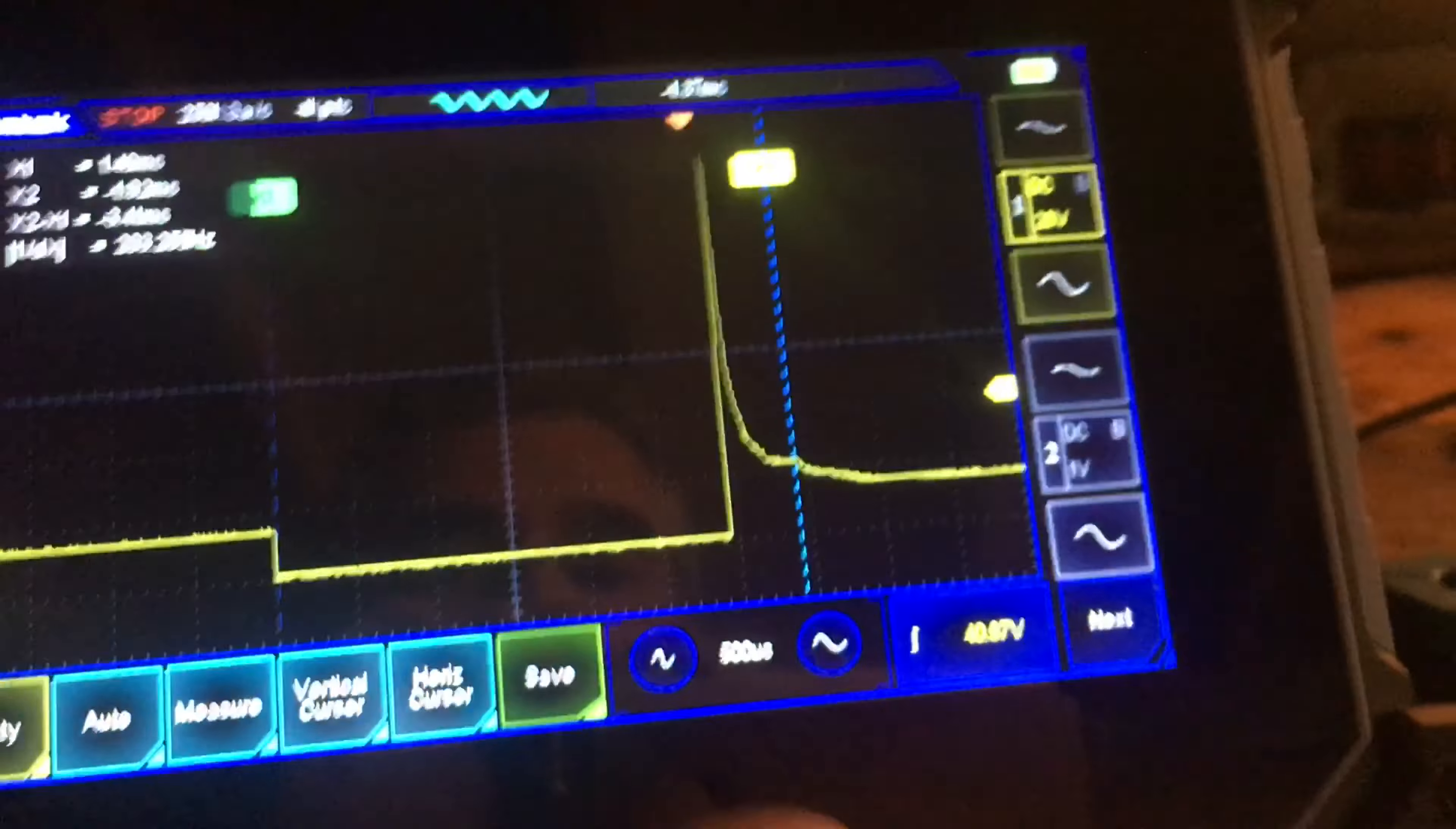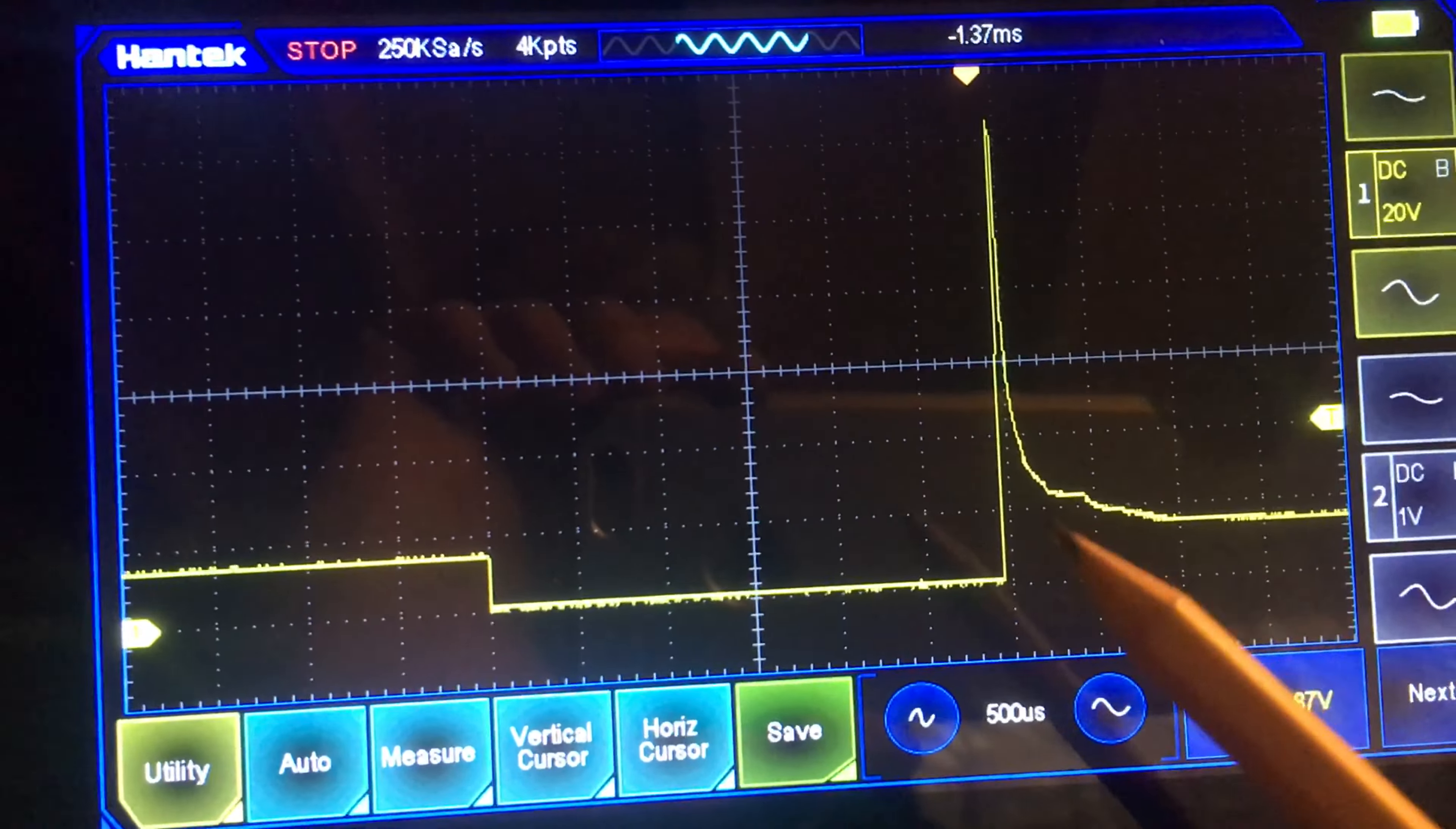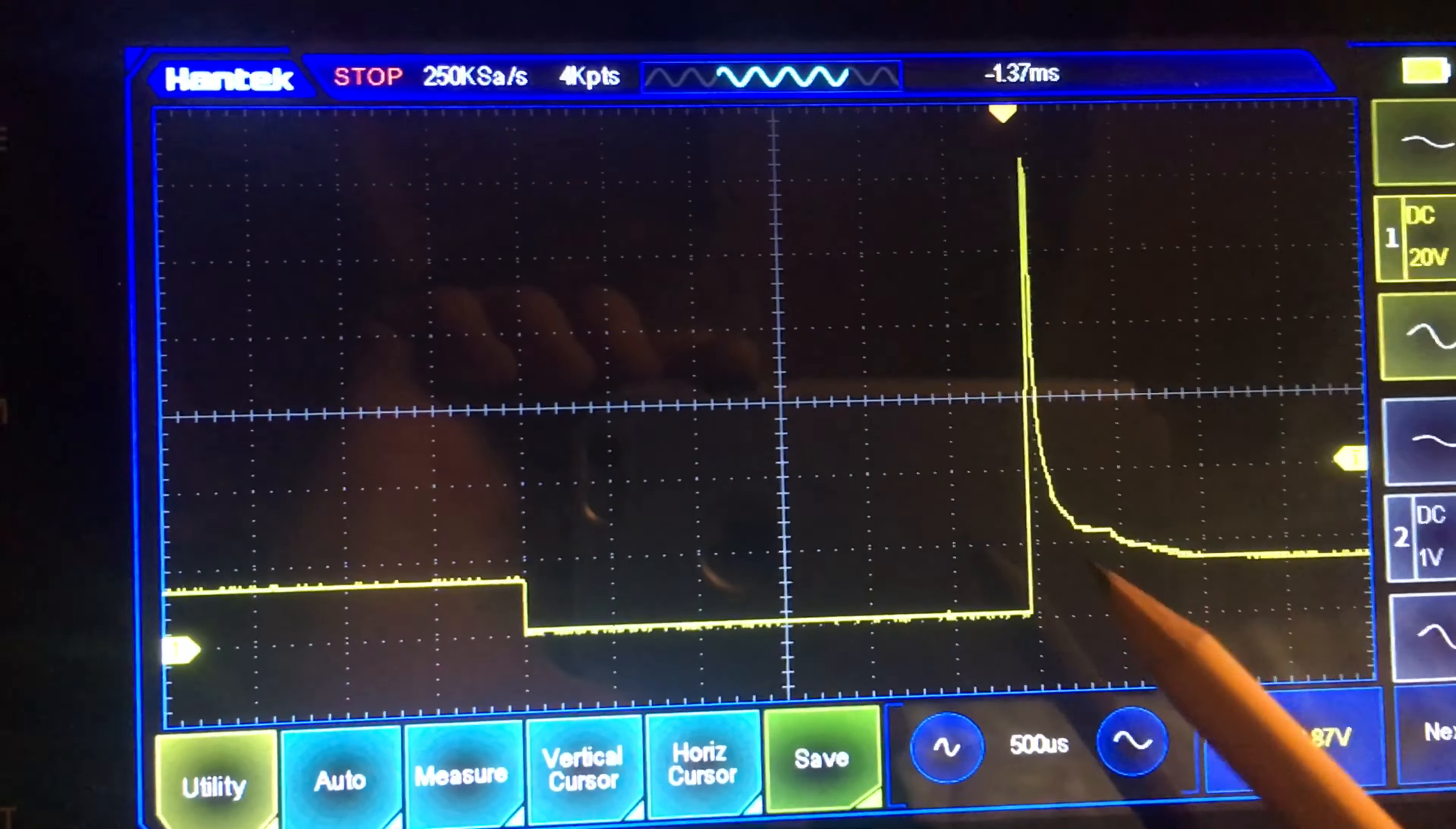That actually lets you know that the pintle is in fact moving. Can you dig that? If you had the pintle seized for whatever reason—corrosion, contamination, whatever the case may be—and the pintle wasn't actually moving, you would still see this distinctive trace. However, it would be minus the pintle hump.